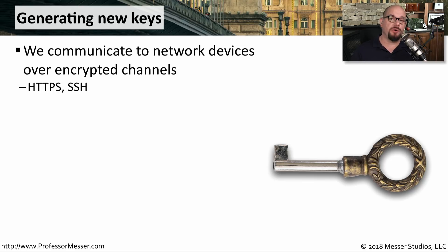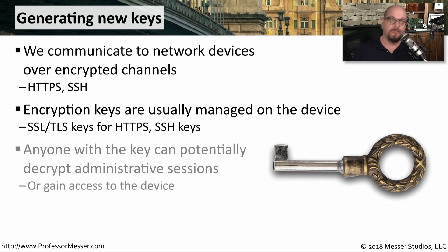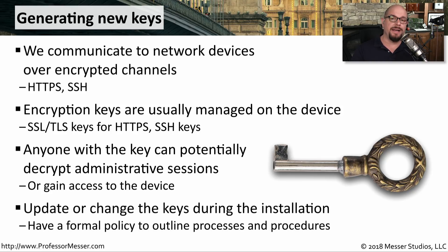To send traffic over encrypted channels, there's always an encryption key involved. If you're using HTTPS, SSH, or almost any other encryption mechanism, this key encrypts the data, and on the other end, decrypts it so it can be seen by the other device. These encryption keys are usually managed on servers and clients — SSL/TLS keys for HTTPS are typically stored on the web server itself, and the same applies for SSH keys. That's why it's important to protect these keys; if someone else gains access to them, they could potentially decrypt information gathered over an encrypted channel. Infrastructure devices and web services may ship with a default key, so make sure it is changed. It's useful to have a formal policy in place to always ensure a device is given a unique key for your organization.